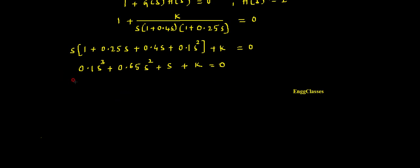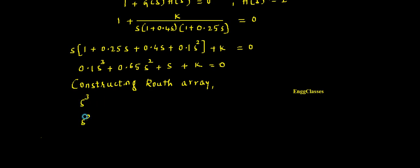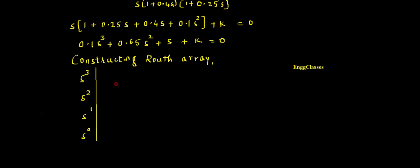Constructing the Routh array. The rows are s³, s², s¹, and s⁰. For the odd-power row (s³): coefficients are 0.1 and 1. For the even-power row (s²): coefficients are 0.65 and k.